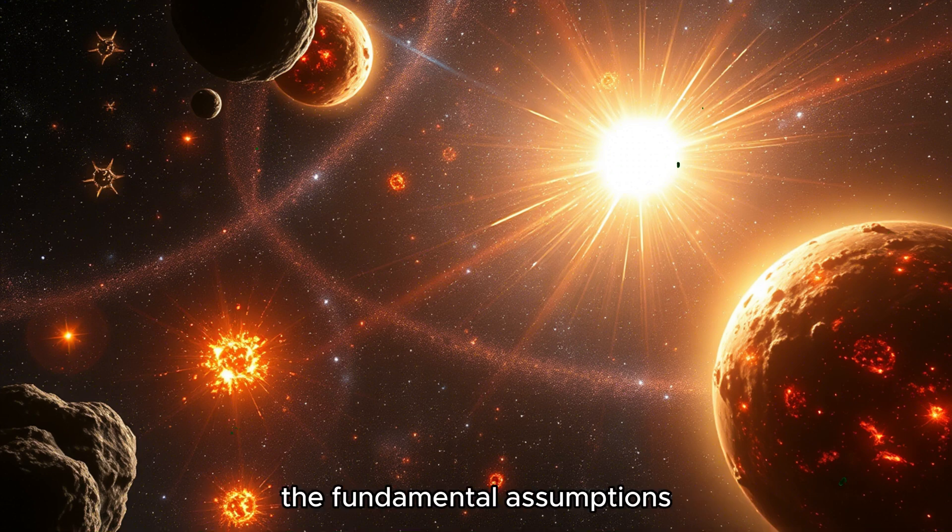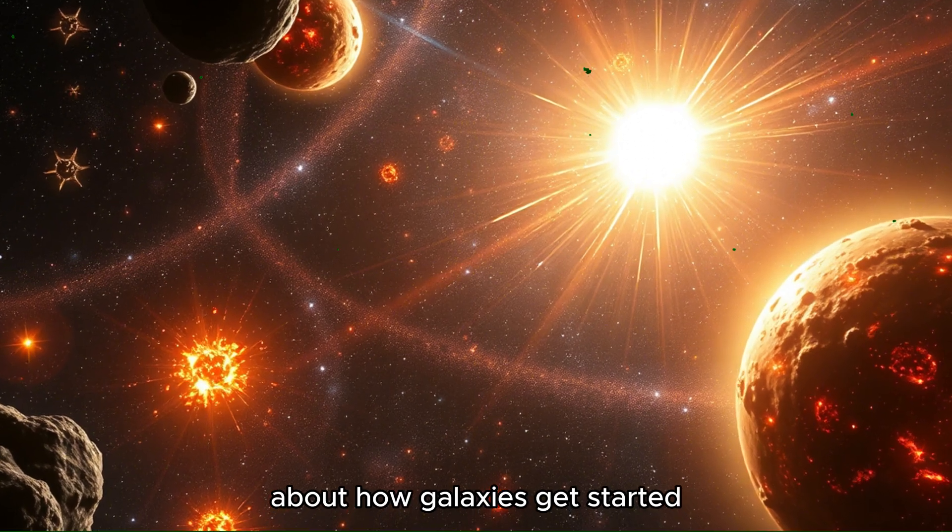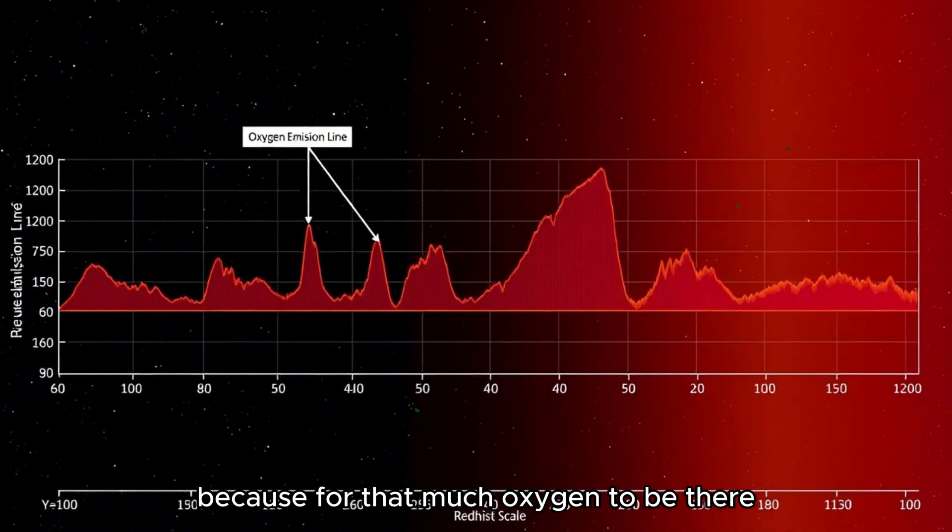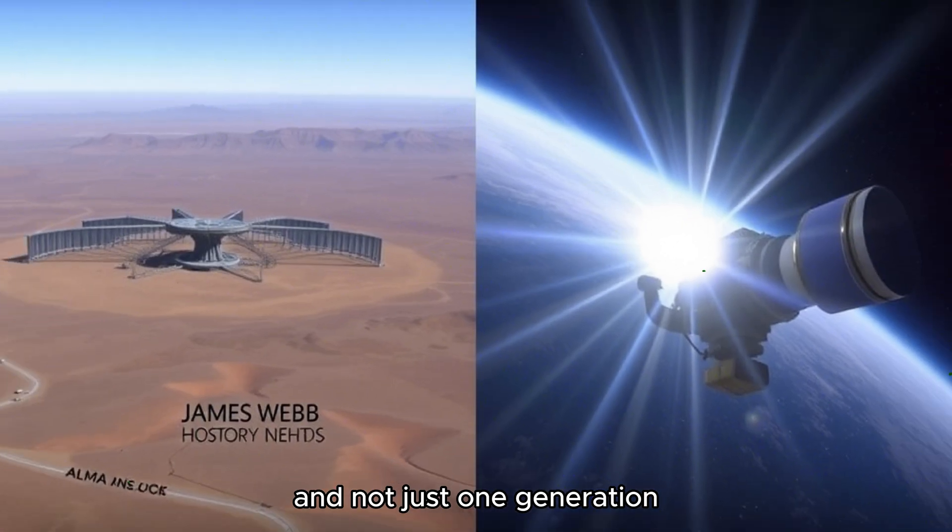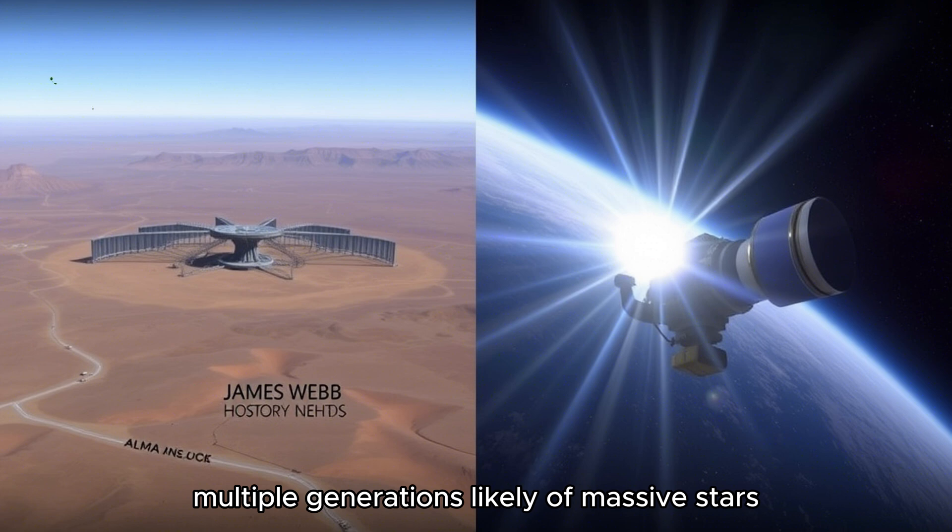It really makes you question the fundamental assumptions about how galaxies get started. Because for that much oxygen to be there, it means stars had to form, live their lives, die, and spread that oxygen around. And not just one generation, maybe. Exactly. Multiple generations, likely, of massive stars.